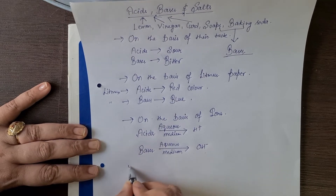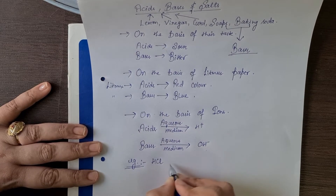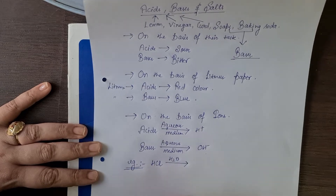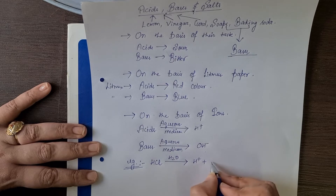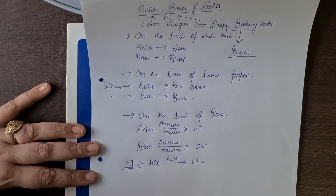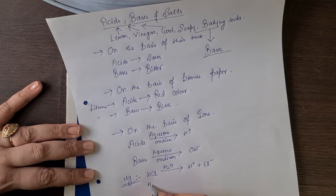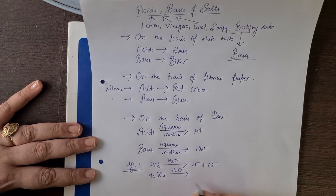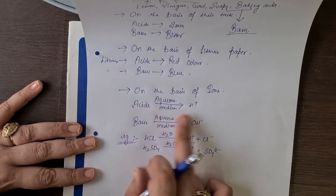For example, HCl is an acid. When it is diluted in H2O it gives H positive and Cl negative. Another example is H2SO4, which is sulfuric acid. When it deals with water or aqueous medium, it gives H positive ions and SO4 2 negative. In both cases, H positive ions are produced — so acids give H positive ions.